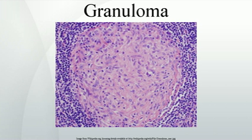Histoplasmosis: Granulomas are seen in most forms of histoplasmosis — acute histoplasmosis, histoplasmoma, and chronic histoplasmosis. Histoplasma organisms can sometimes be demonstrated within the granulomas by biopsy or microbiological cultures.